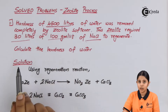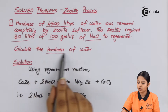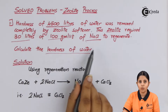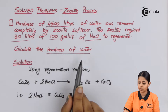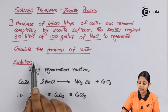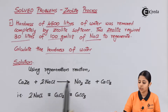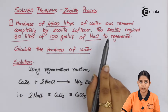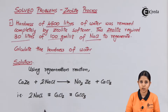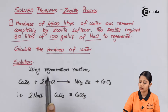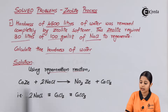What is there to calculate? We need to calculate the overall hardness of water. Whenever we use the zeolite permutite method, we use the regeneration reaction.